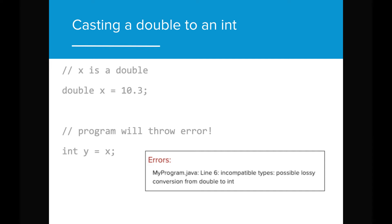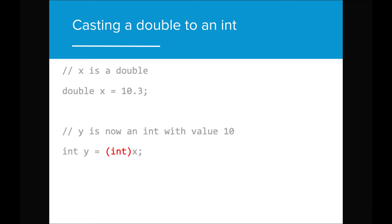If we try to assign the value of the double x to the int of y, there will be an error, as the int type is not compatible with the data type double that y is being assigned. But if we cast the value of x to an int, then the value of y will now be 10 without any error or complications.